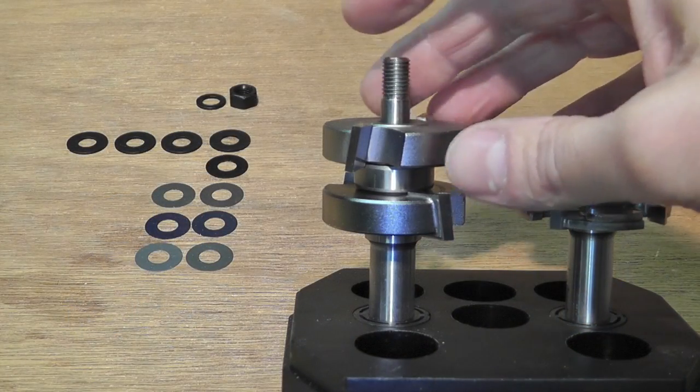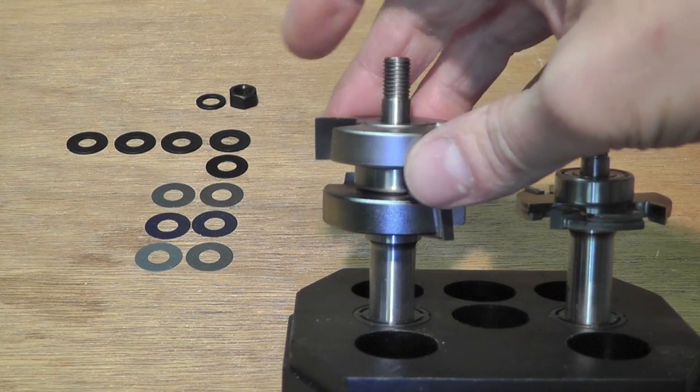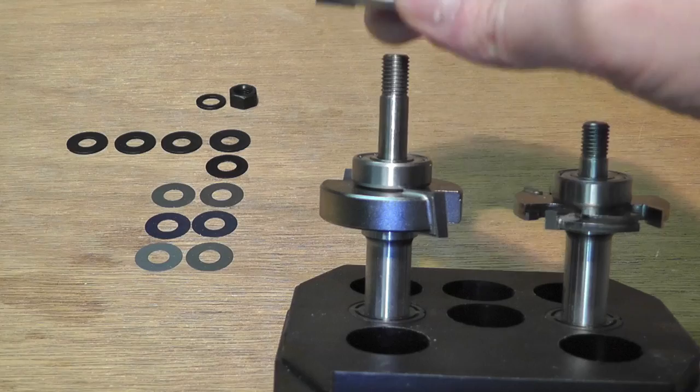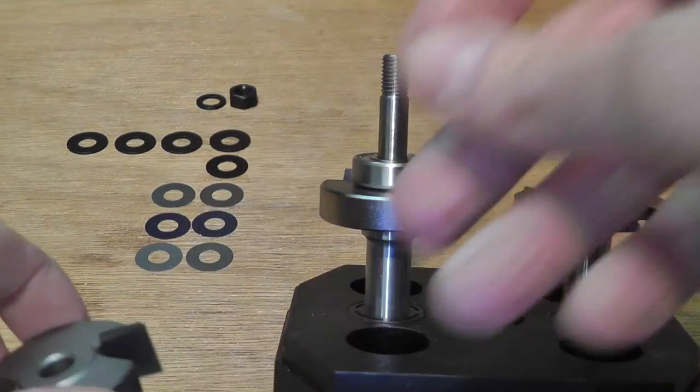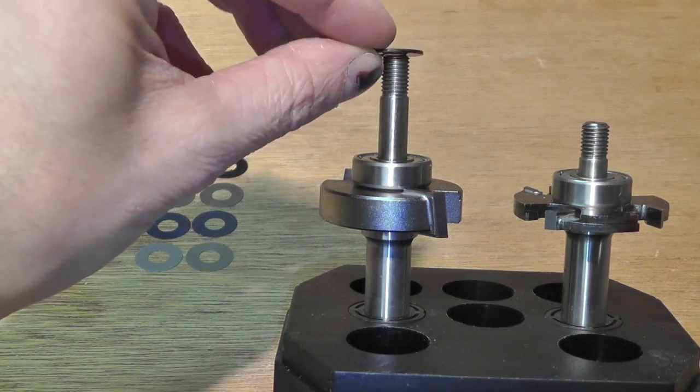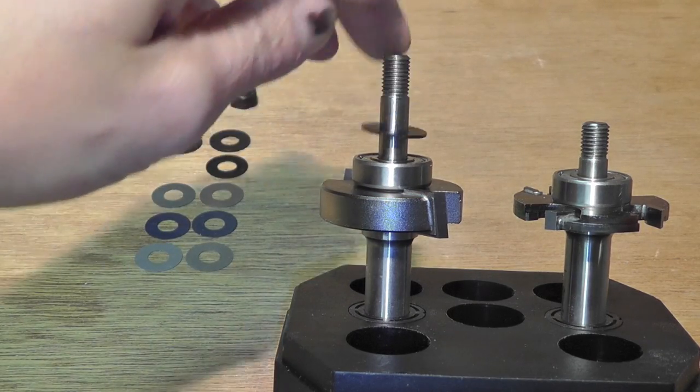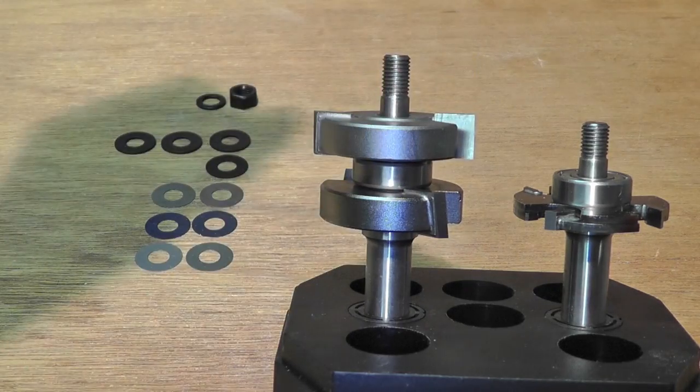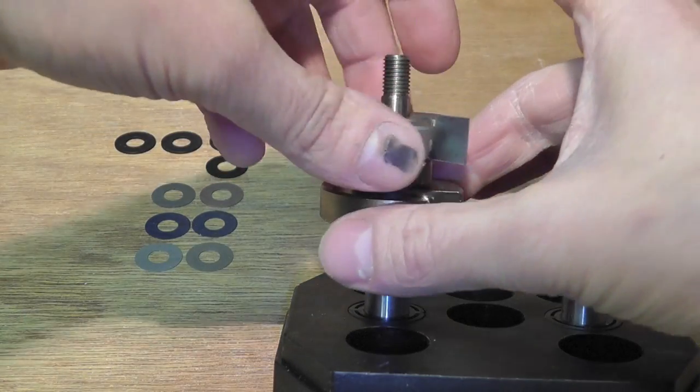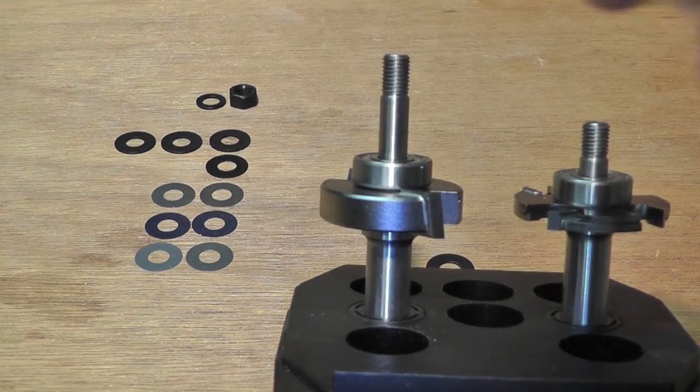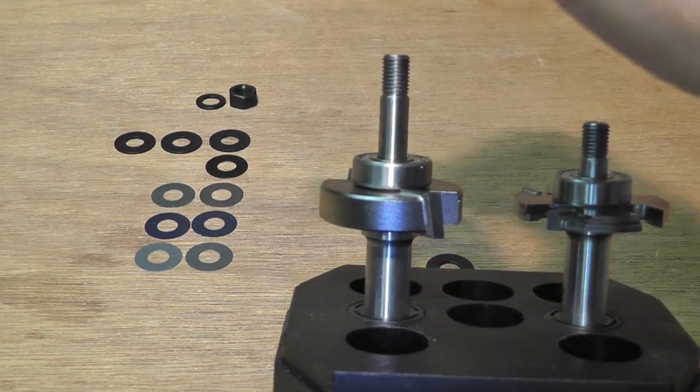The way that you use these spacers is by removing the top cutter and then adding these spacers on top here. Here, for example, I'm taking the one millimeter spacer and then putting the cutter back on top of this. This is how you achieve the different groove widths.